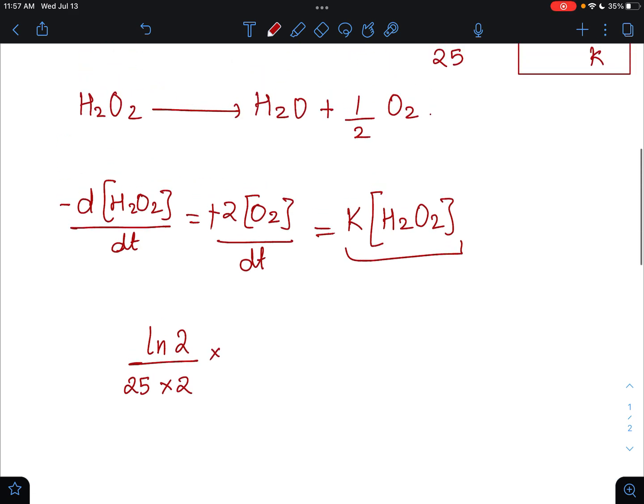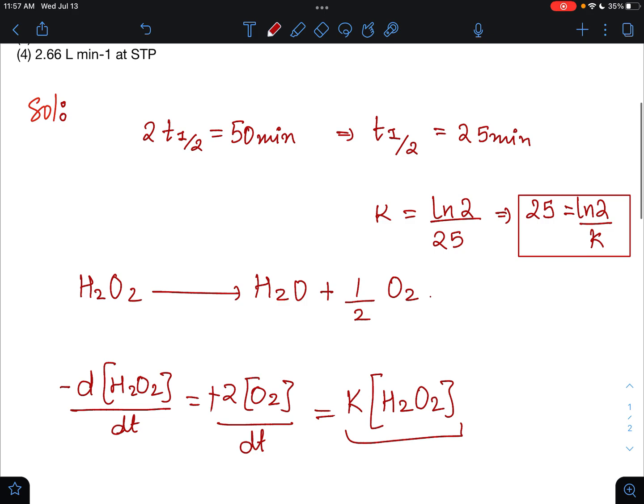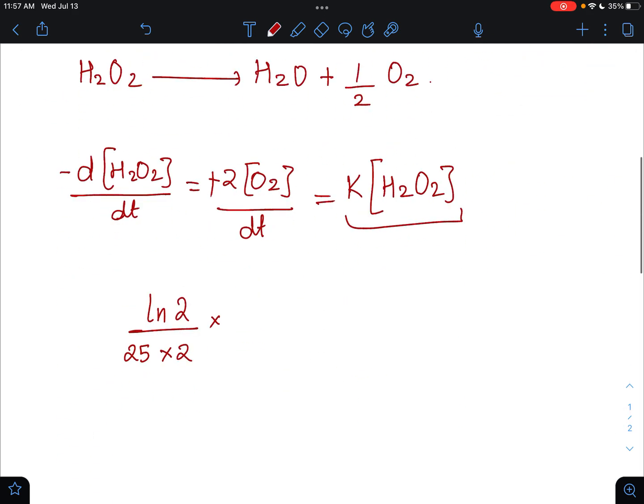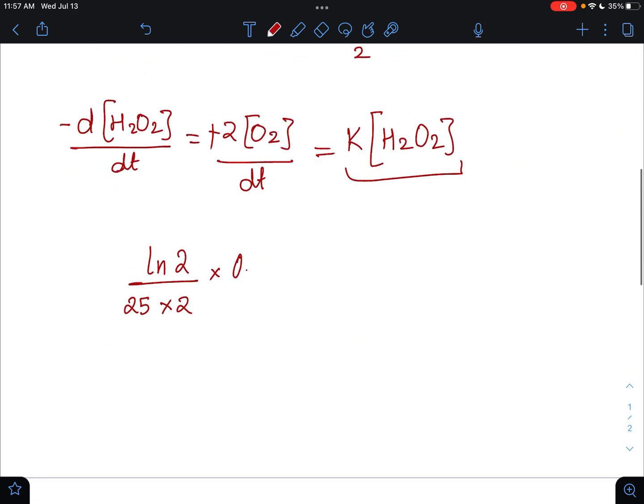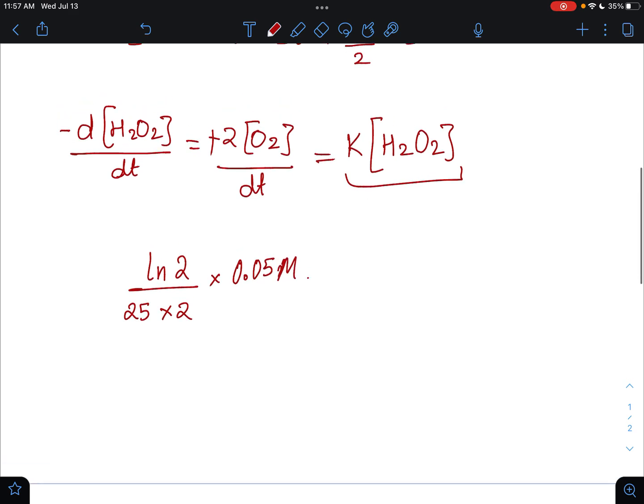into, what is the concentration of H2O2? Concentration of H2O2 is 0.05 molar. Then we will get that 0.693 into 0.001.